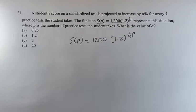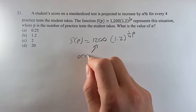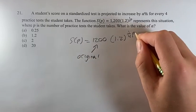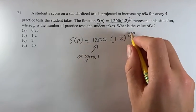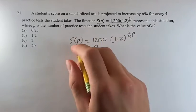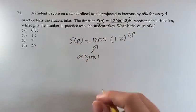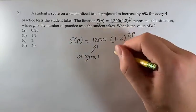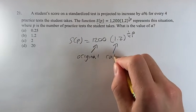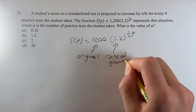Now, this is the pretty standard growth or decay model. We're going to be looking at here is 1,200 is the original value, because if you thought of p is equal to 0, then 1.2 to the 0 would just be 1. So at time equals 0, or p is equal to 0, it's just equal to 1,200. This is going to be our rate of growth or decay. We don't know yet, we're about to find that out.